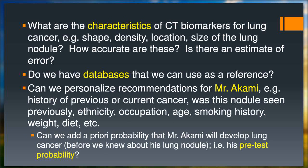Questions we can describe about the nodule include shape, density, location, and size. Is there an estimate of error on the measurement? Do we have databases we can use as a reference? Would we refer to our own mental database of patients with 7-millimeter nodules, or are there other databases available? And can we personalize recommendations for Mr. Akamai — look at the nodule, take information about him, and create a pretest probability?